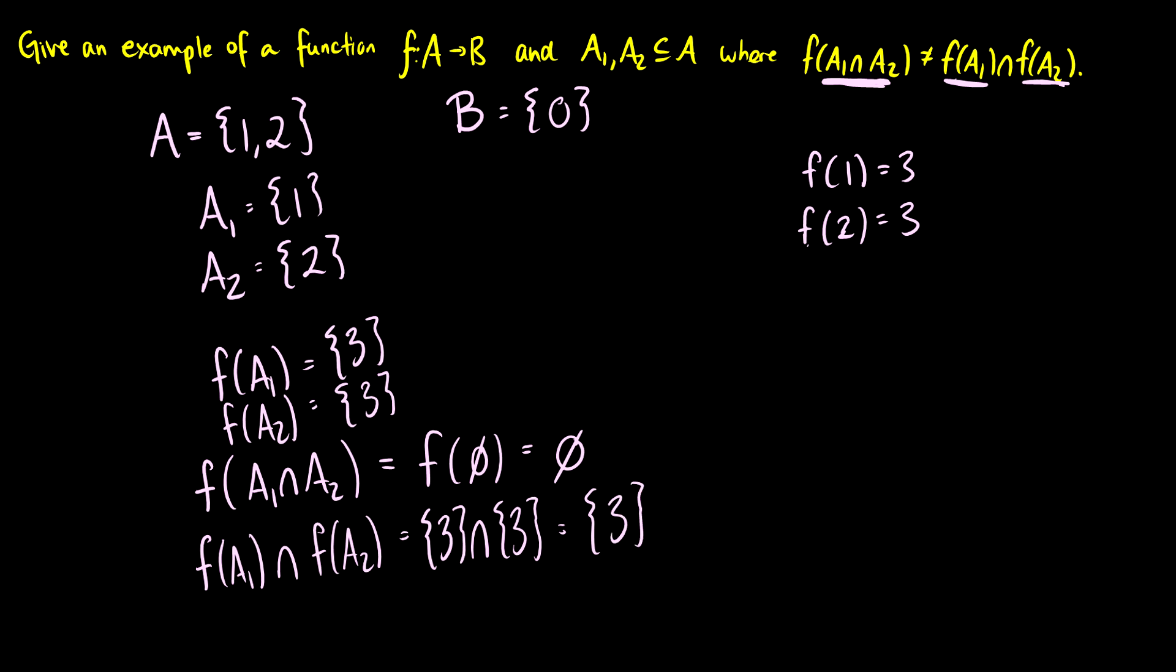So we've defined a function, a domain, a codomain, and two subsets such that the f of the intersection of A1 and A2 is not equal to f(A1) ∩ f(A2).